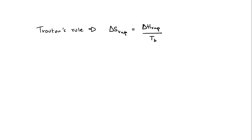Let's talk about Trouton's Rule. We have seen a version of this equation before when we were trying to figure out our equation for delta G. This delta S equals delta H over a temperature.